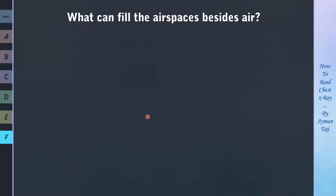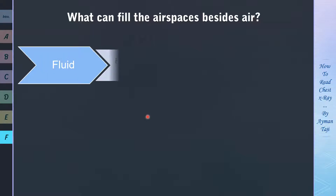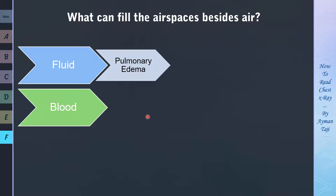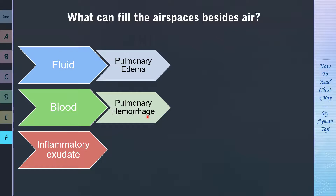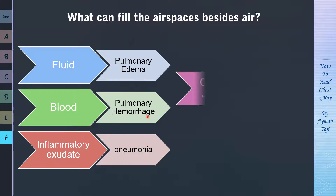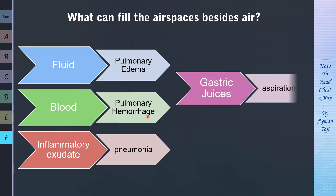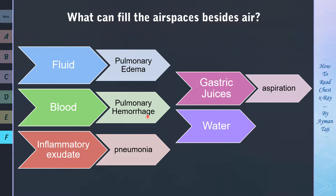Now we know how alveolar diseases appear on chest X-ray, but why does this happen in the first place? What can fill air spaces besides air? First, it can be fluid as in pulmonary edema. It can be blood as in pulmonary hemorrhage. It can be inflammatory exudate as in pneumonia, gastric juices as in aspiration, or water as in near-drowning cases.